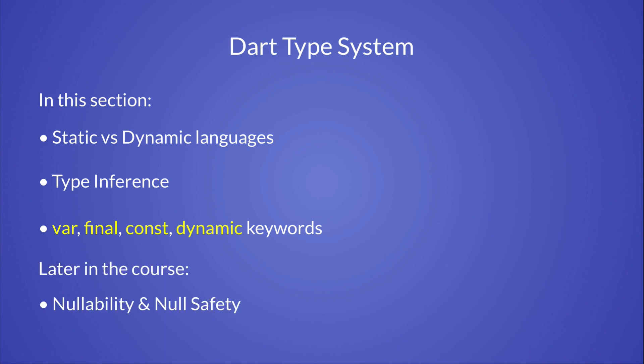One big aspect of the Dart type system is nullability, which is about declaring and using variables that may or may not have a value. But we will cover nullability later on in this course, and for now we will focus on the type system.